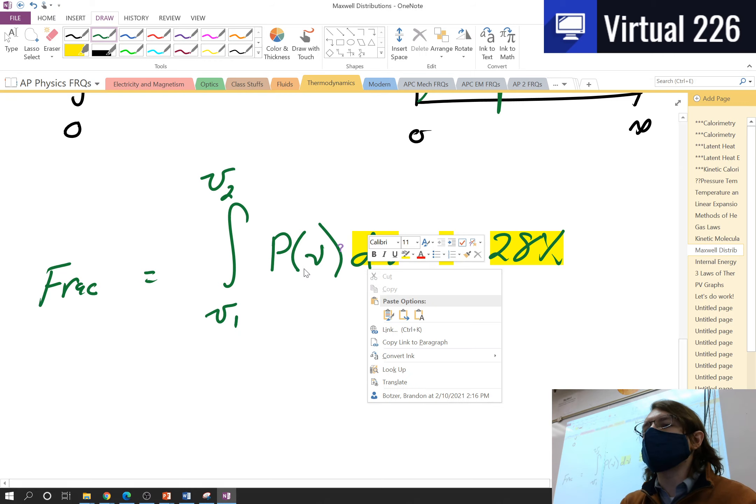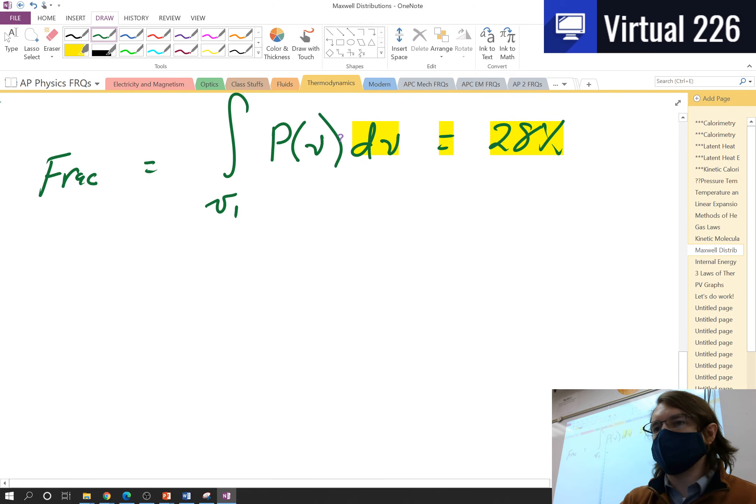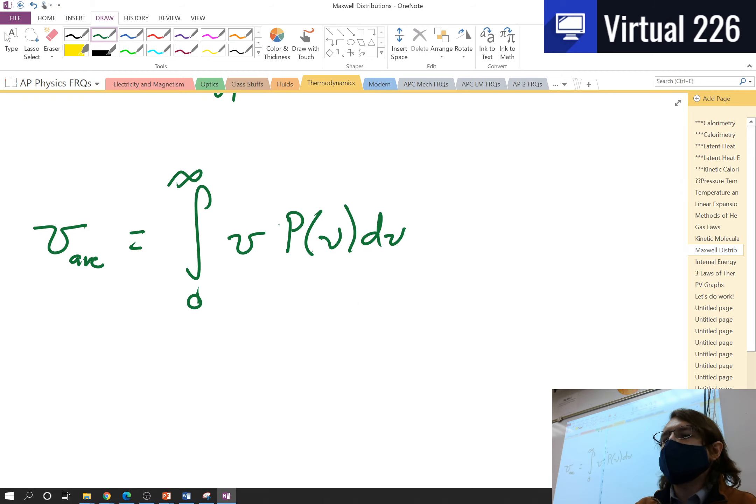However, this just gives you the fraction, it just gives you the number that are moving at some speed. If you actually wanted to figure out what is an average velocity in general of all of the gas particles moving around, you could integrate it from 0 to infinity of v multiplied by the distribution function. In doing this, you would actually find this average velocity here.